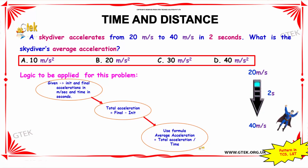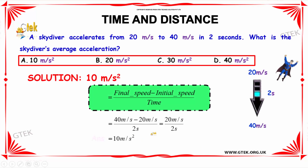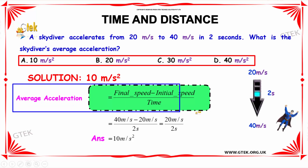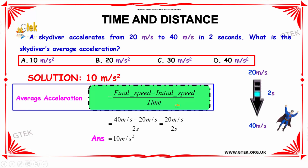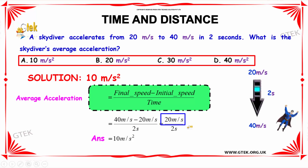Let us see the solution for this problem. Since the average acceleration equals the final speed minus the initial speed divided by time, substituting the known values: 40 meters per second minus 20 meters per second divided by 2 seconds, which equals 20 meters per second divided by 2 seconds, which gives 10 meters per second squared.